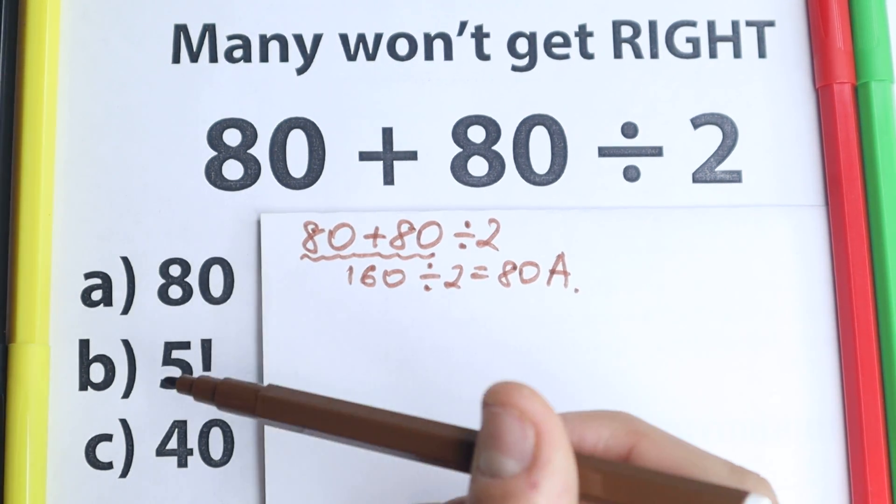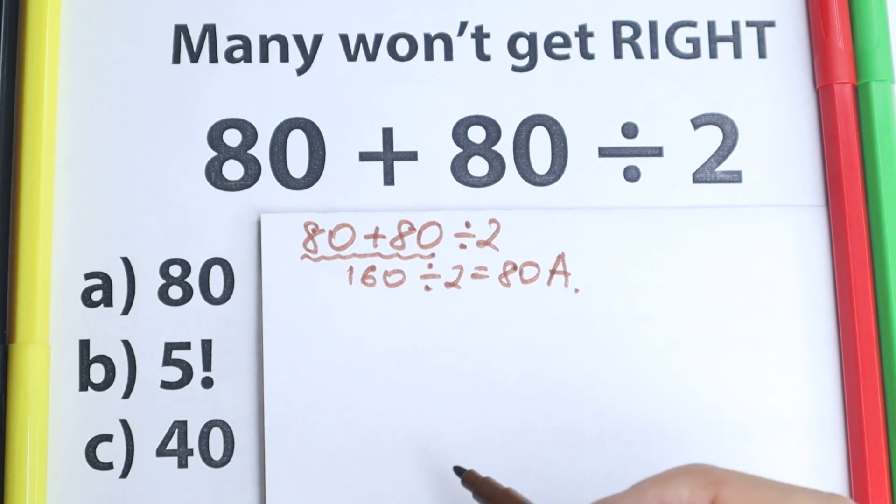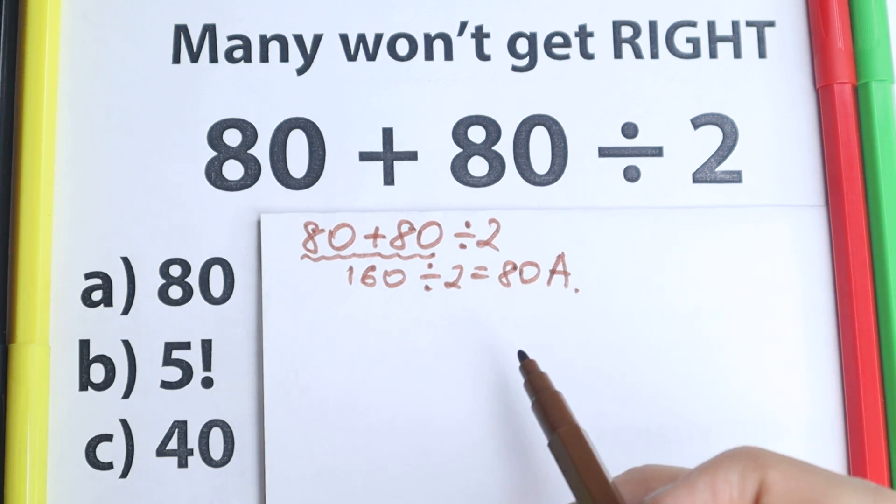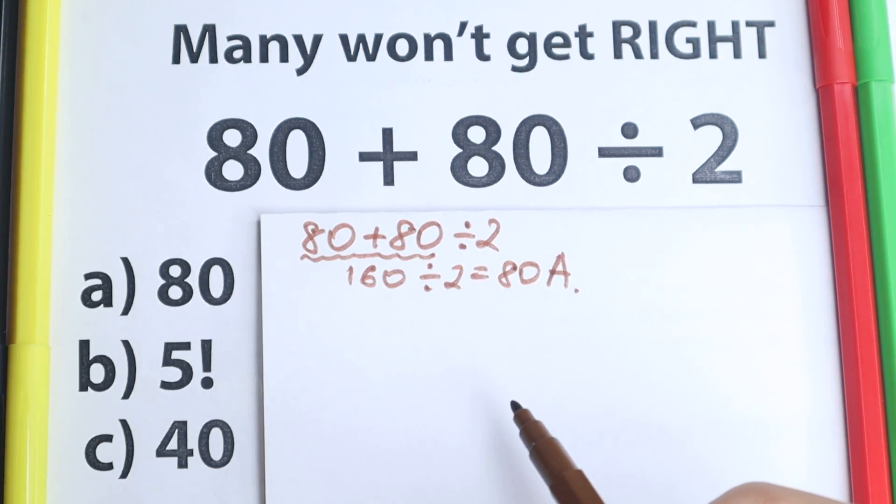What do you think is a correct answer? We have A, B and C, three options. So it's really interesting to check your school knowledge and of course to check your brain level right here. Really interesting question. So pause the video and try to solve it by yourself.